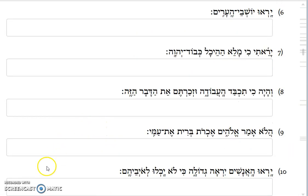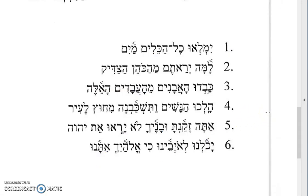Now let me do some supplemental exercises from David Clemens. The first is kalu kol ha-kaleem mayim. The verb kalu is Kal perfect, third masculine plural. Kol ha-kaleem means all the vessels — kaleem is the irregular plural of kali. The verb means to be full of, and mayim means water. So: all the vessels will be full of water.